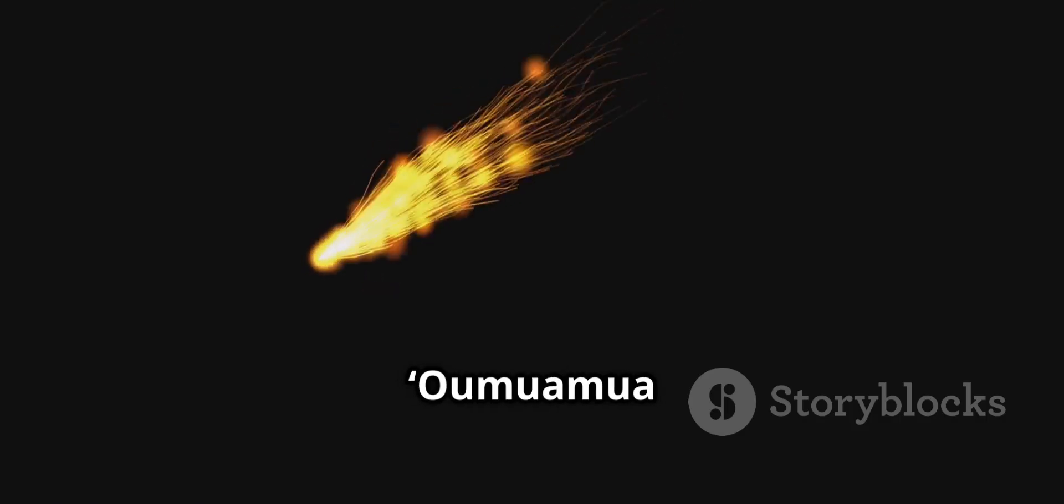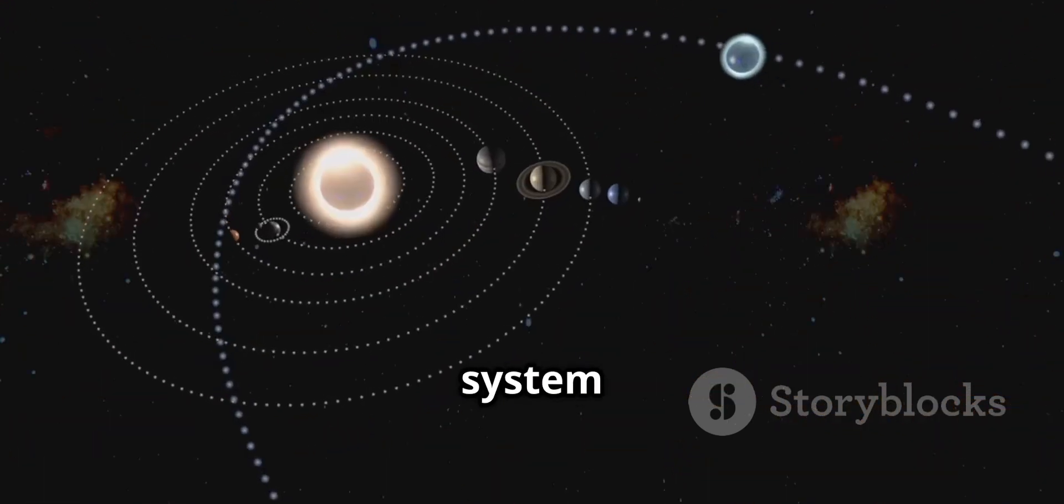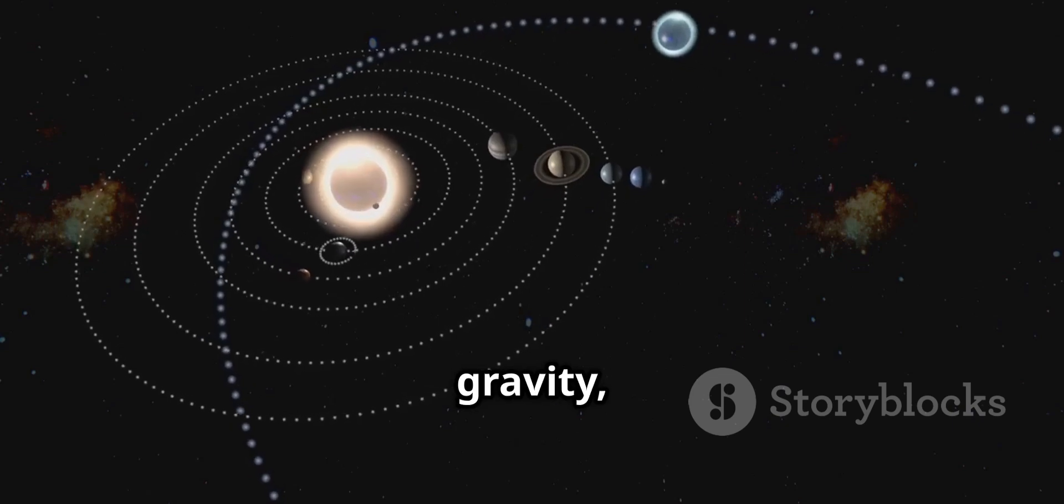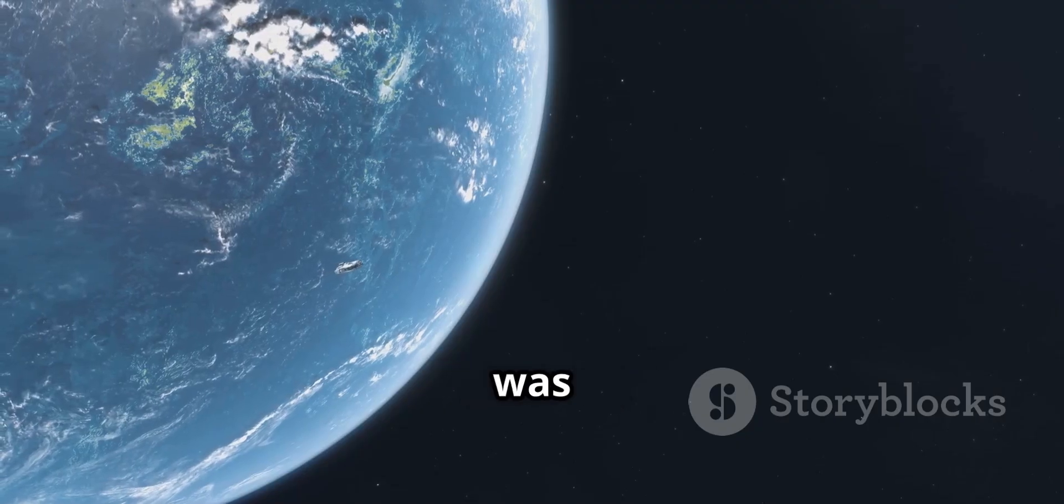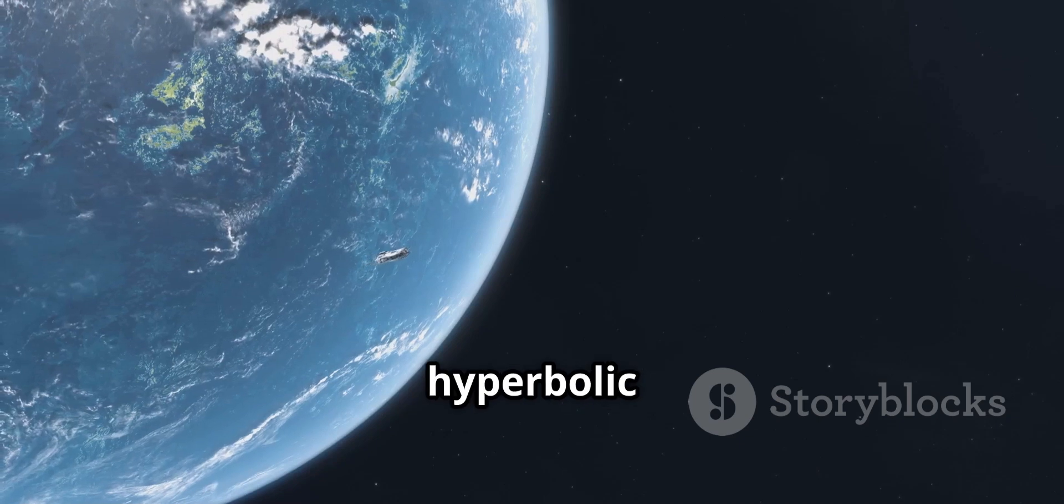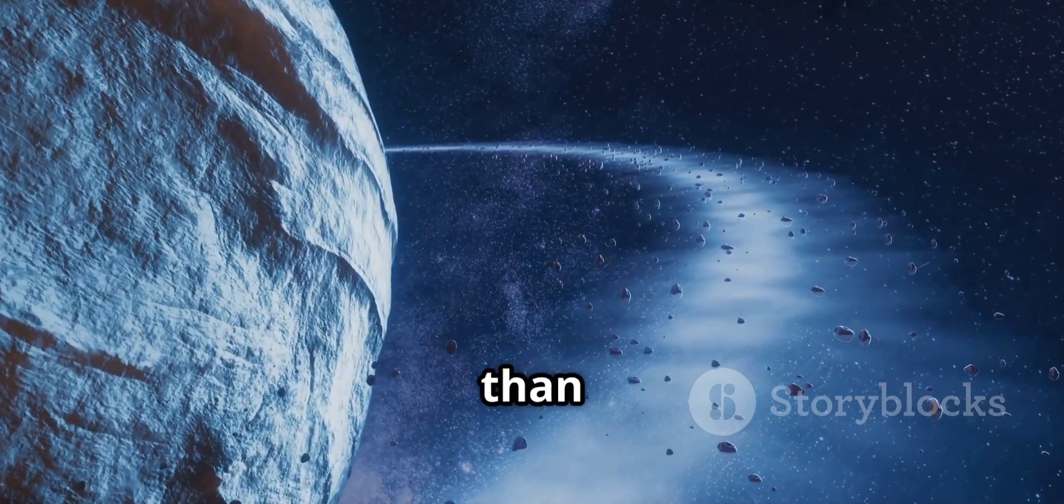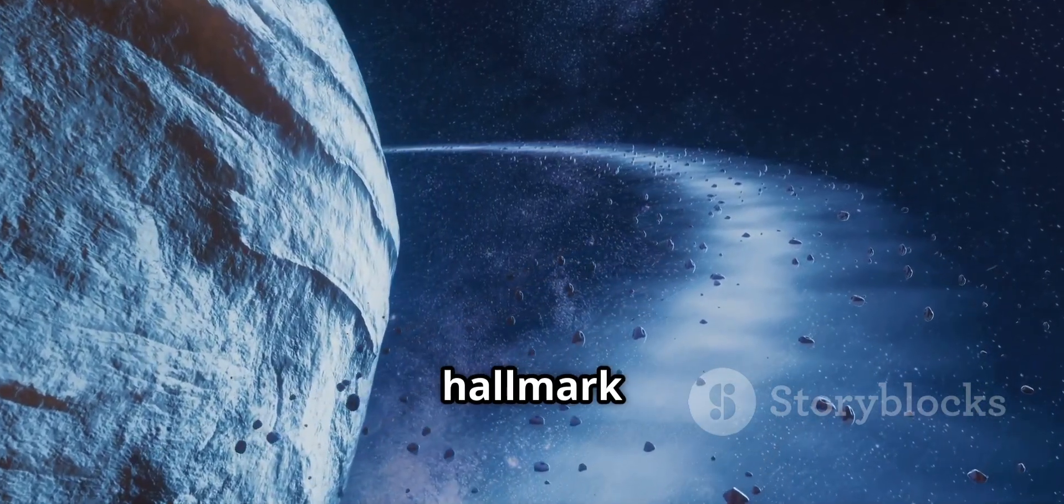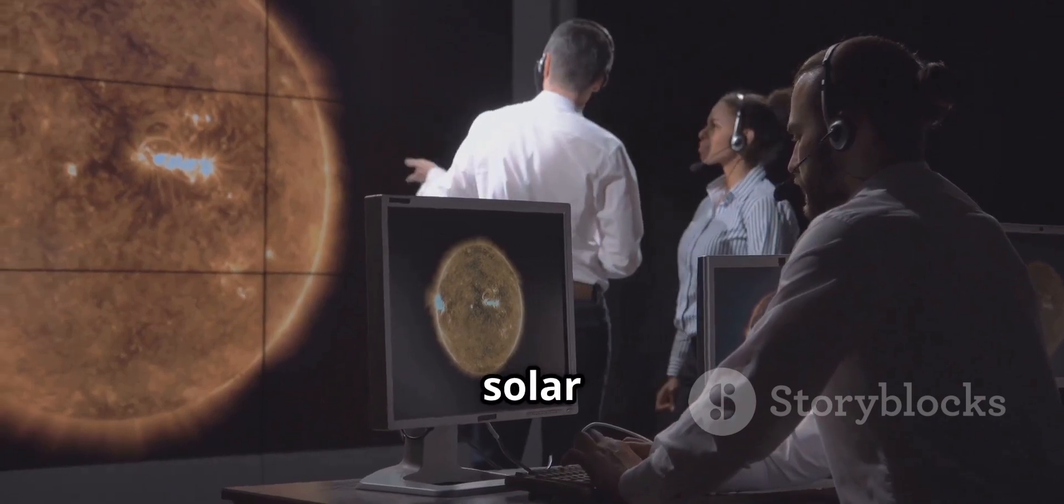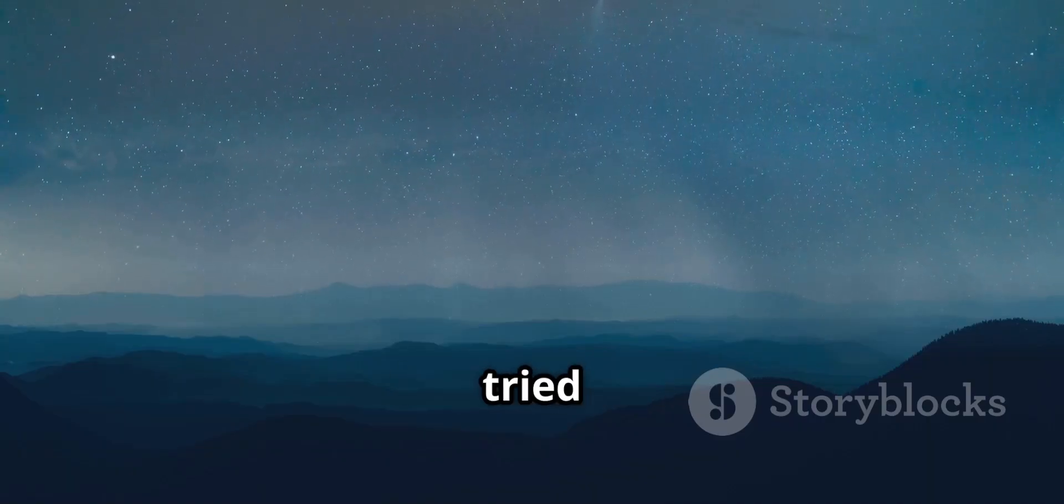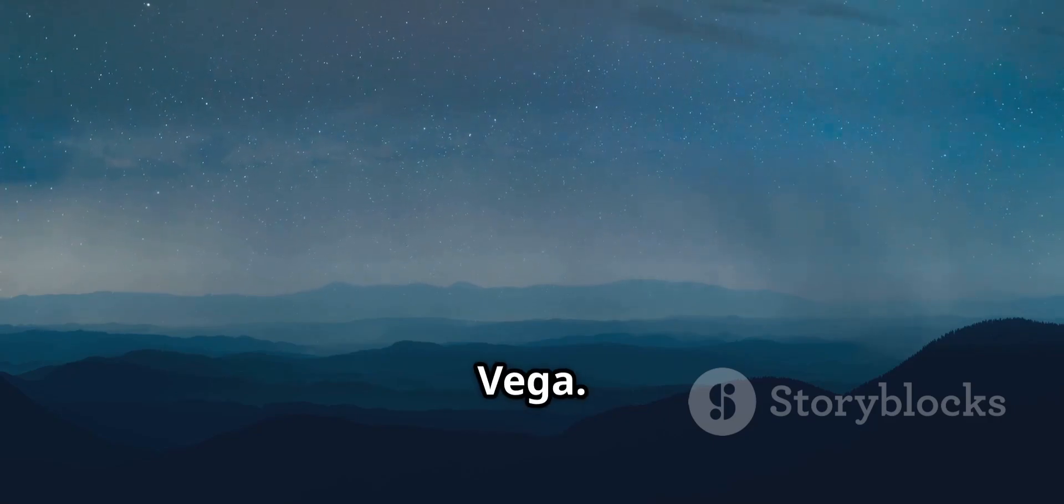How did we know 'Oumuamua was interstellar? It's all about speed and trajectory. Solar system objects are trapped by the sun's gravity, following closed orbits. 'Oumuamua, however, was moving too fast on a hyperbolic path, never to return. Its trajectory had an eccentricity greater than one, the mathematical hallmark of an interstellar object. This was the smoking gun. It wasn't from our solar system. Astronomers tried to trace its origin, finding it came from the general direction of Vega.